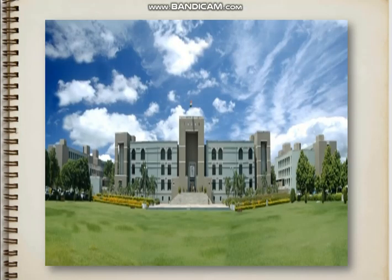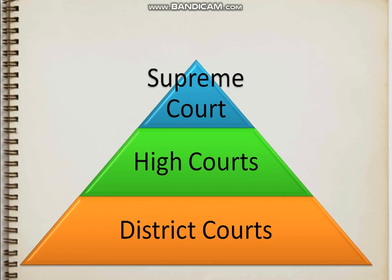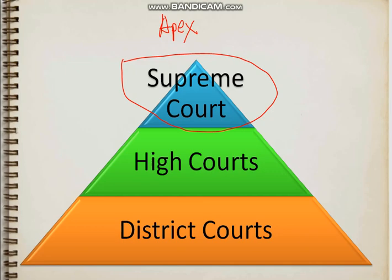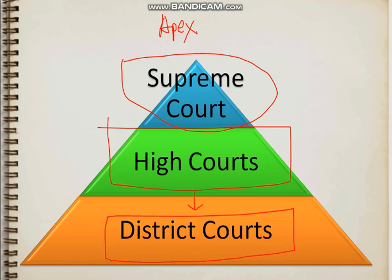This is the pyramid of our judicial system: the Supreme Court is at the top as the apex court of India. Under the Supreme Court come all the High Courts, which are at the state level. Under those High Courts are the District Courts at different districts and all other local courts. The pyramid always goes in ascending order — if you have a case in district court, you can appeal to the high court and then to the Supreme Court, but the Supreme Court's decision is final.